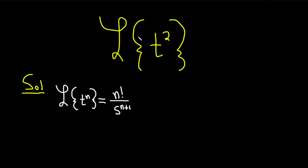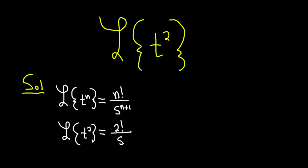Let's apply it to our problem. We have the Laplace transform of t squared, so this is equal to n factorial — our n is 2 — so this is 2 factorial over s to the 2 plus 1, which is just 3. Notice this is 2 factorial over s to the third power. It's 1 higher — see how it's 1 higher?